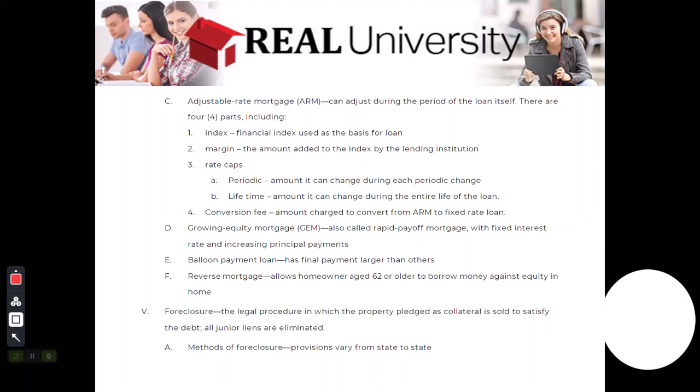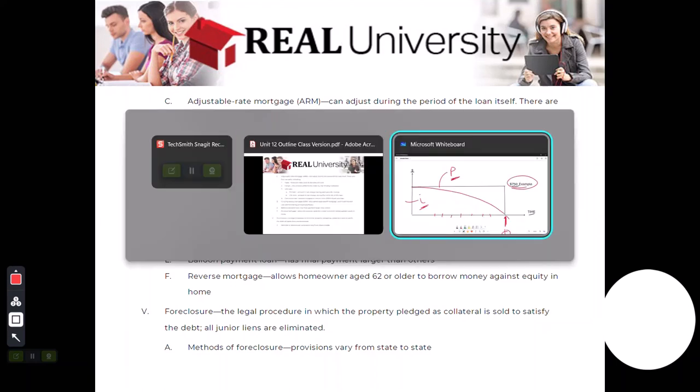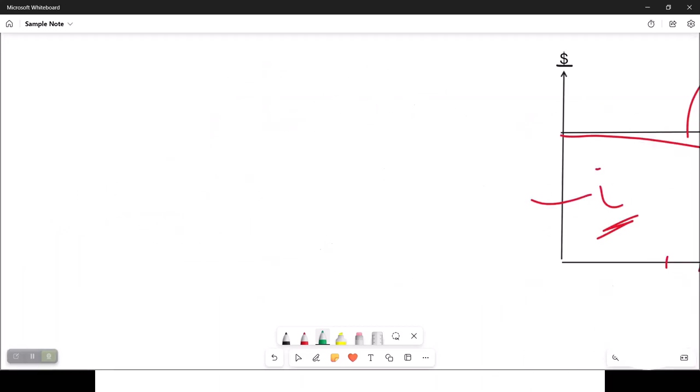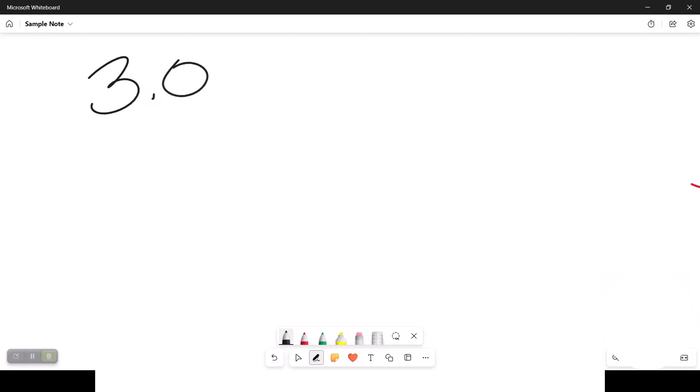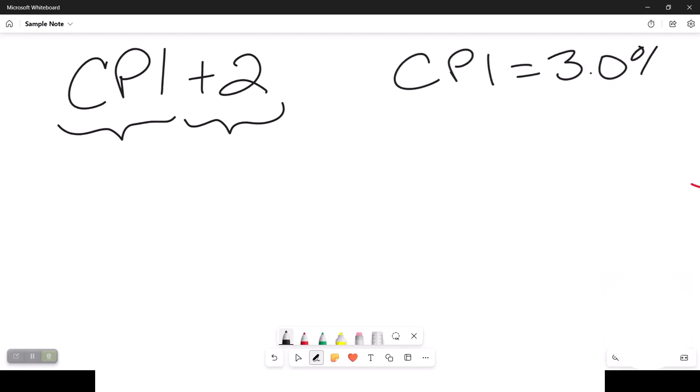Each period, it changes. So in an example, it might be plus or minus one. The bank says we use the consumer price index plus two. There is the index. The plus two is the margin. And in an example, let's say the consumer price index is 3% the day you got the loan. Therefore, your loan amount is three plus two or 5%. And that consumer price index actually can change next month.